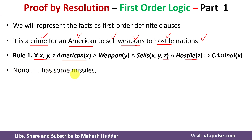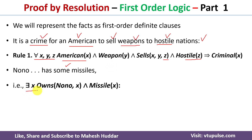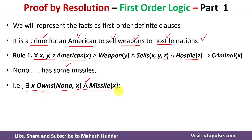The second statement is: Nono has some missiles. The word 'some' indicates an existential quantifier, and with existential quantifiers we use AND as the connective. So: ∃x Missile(x) ∧ Owns(Nono, x). Since there is an existential quantifier, we can remove it by replacing x with a Skolem constant m1. This gives us two clauses: Owns(Nono, m1) and Missile(m1).